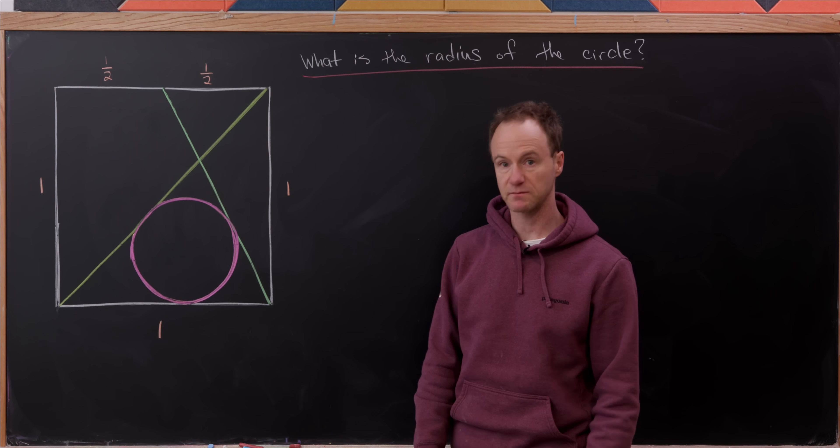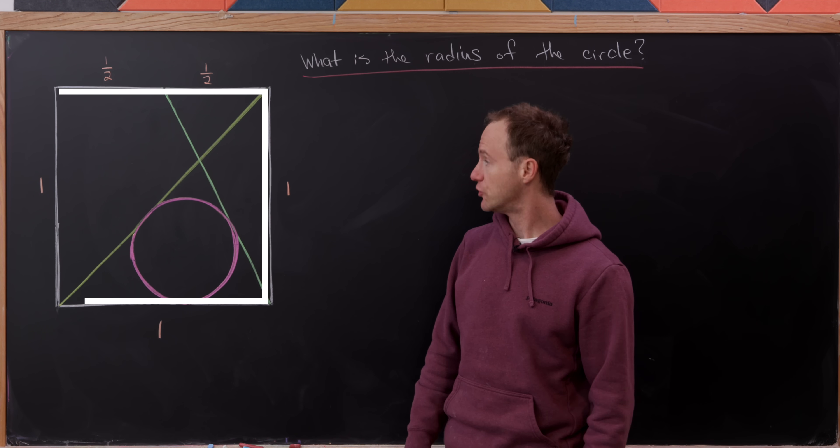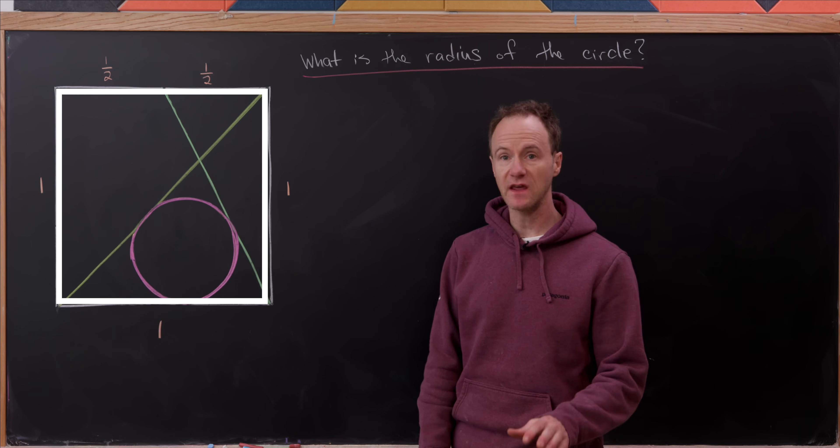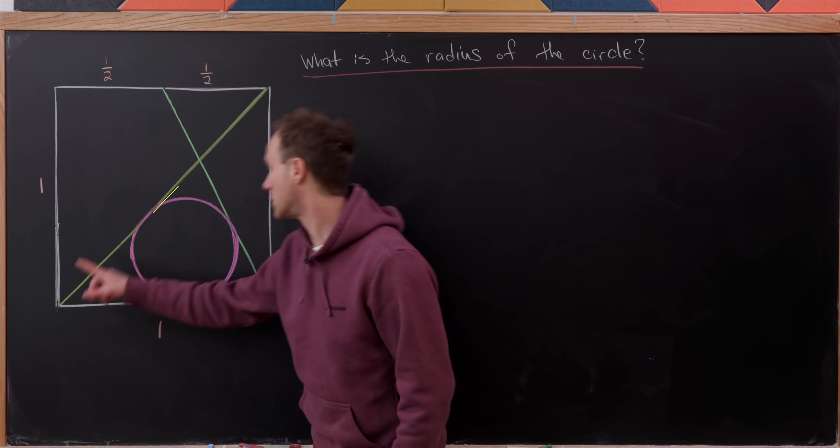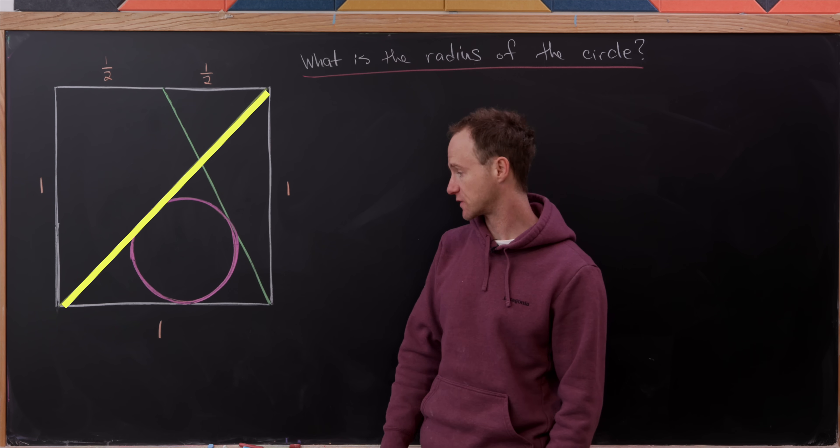Today we've got a nice geometry problem, so let's dive right into this setup. We've got a unit square, and then we add a diagonal from the left bottom to the right top of this unit square.